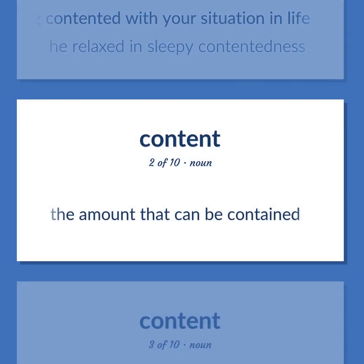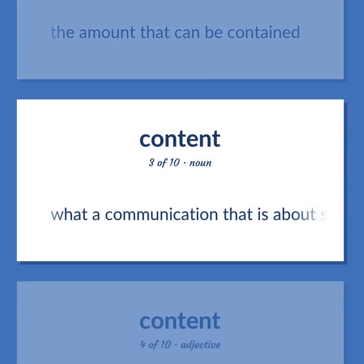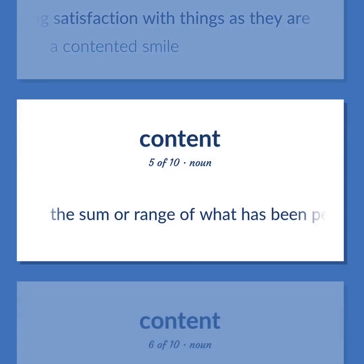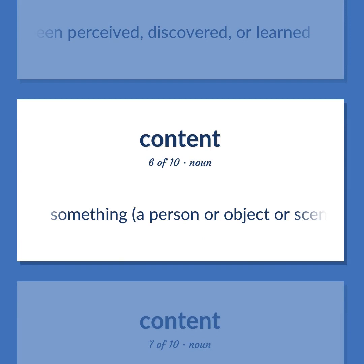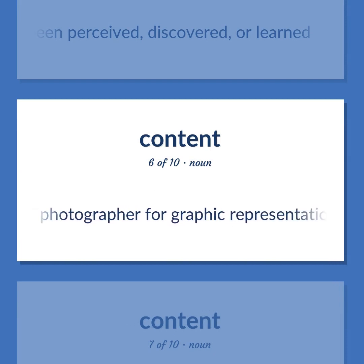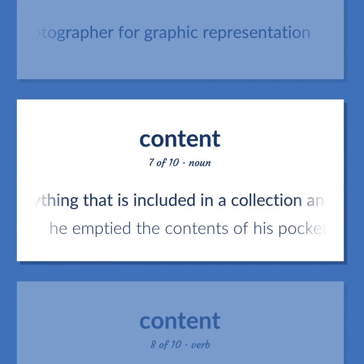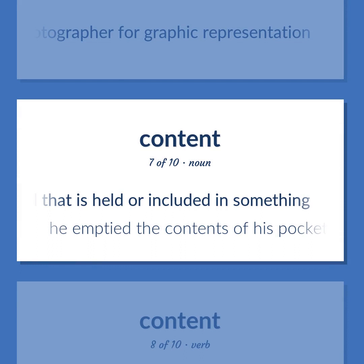The amount that can be contained. What a communication that is about something is about. Satisfied or showing satisfaction with things as they are. A contented smile. The sum or range of what has been perceived, discovered, or learned. Something — a person or object or scene — selected by an artist or photographer for graphic representation. Usually plural: everything that is included in a collection and that is held or included in something. He emptied the contents of his pockets.